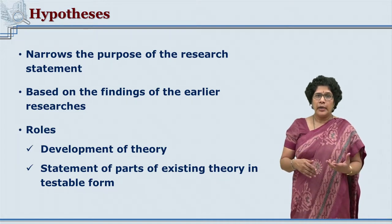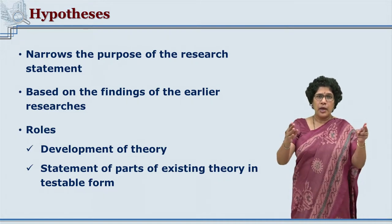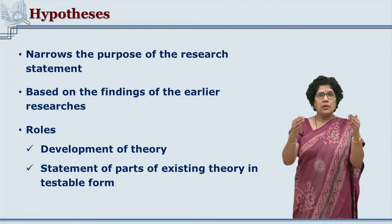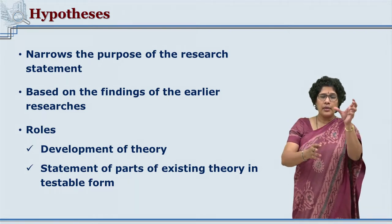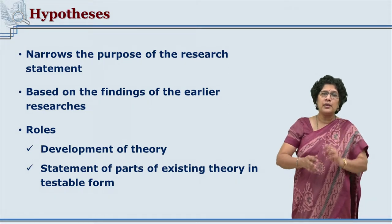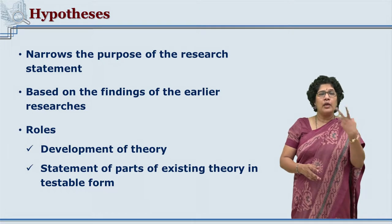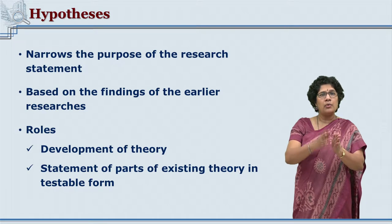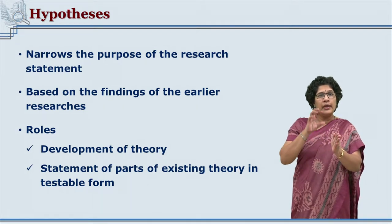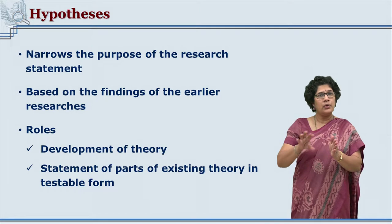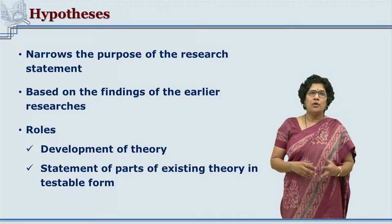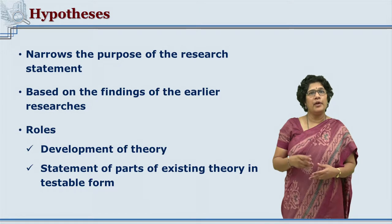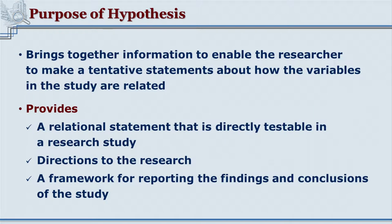We have already seen that from research titles, when we come to the objectives the research work gets narrowed down. From objectives, when we come to the hypothesis, the work gets further narrowed down and exactly what is to be observed becomes clear to the researcher. The major role that hypothesis performs is the development of theory — bringing together earlier information about how the variables involved may be related with each other.